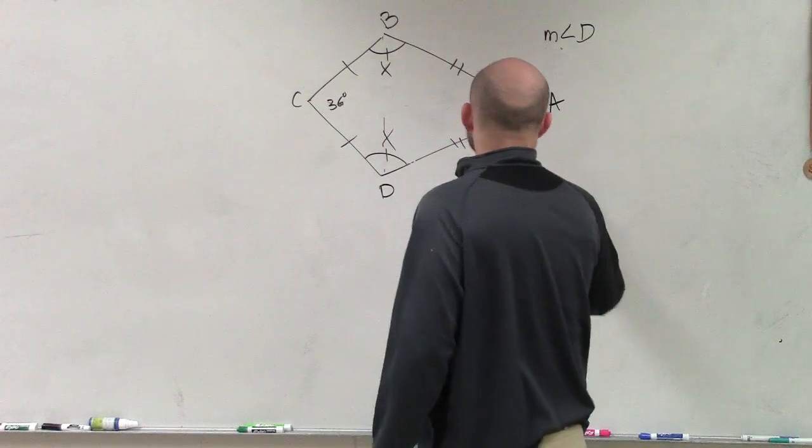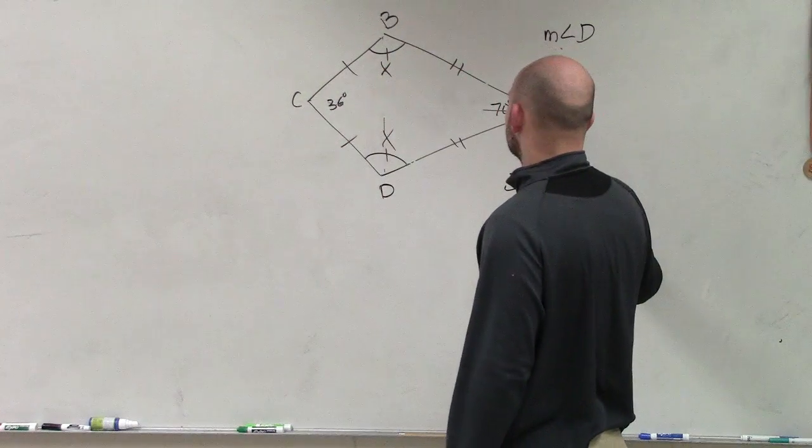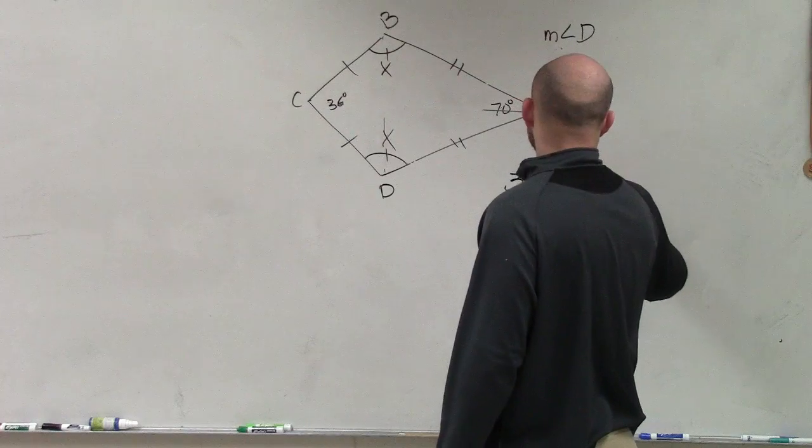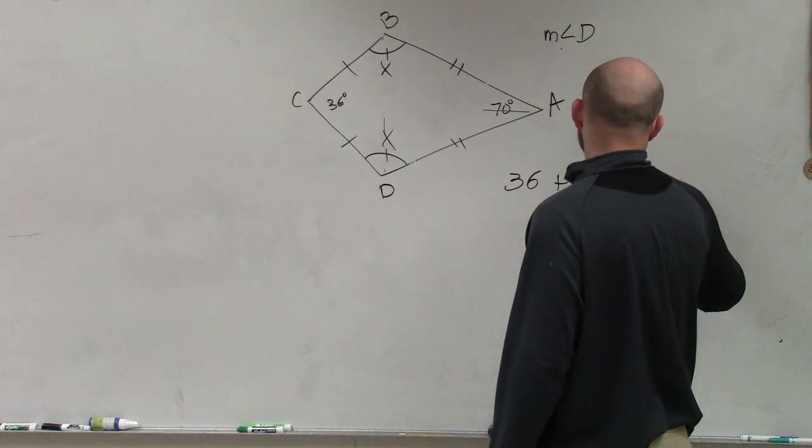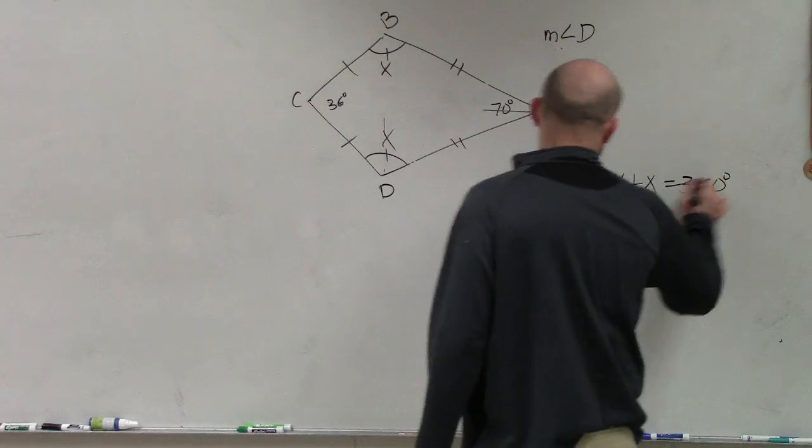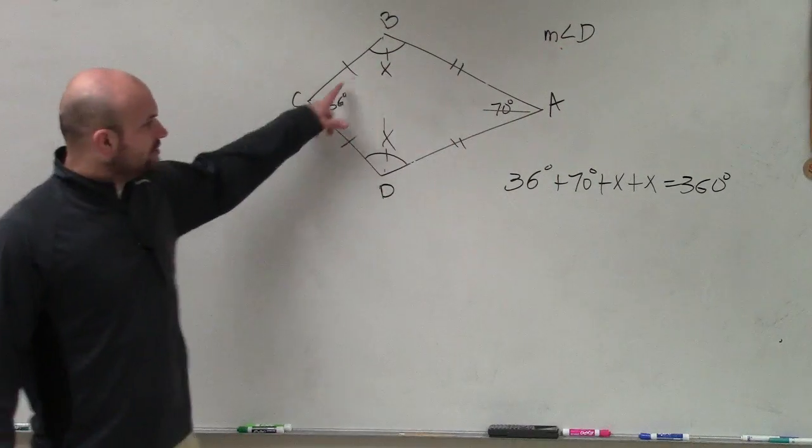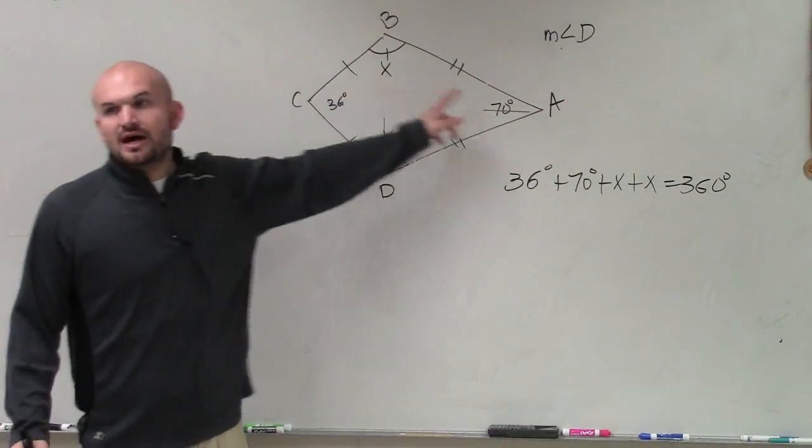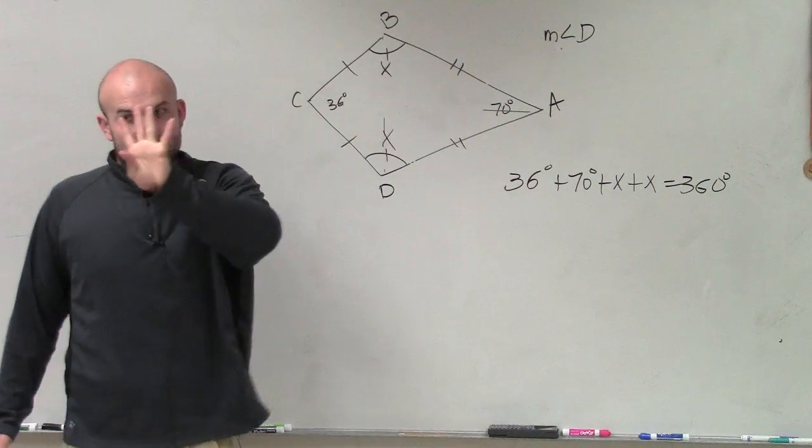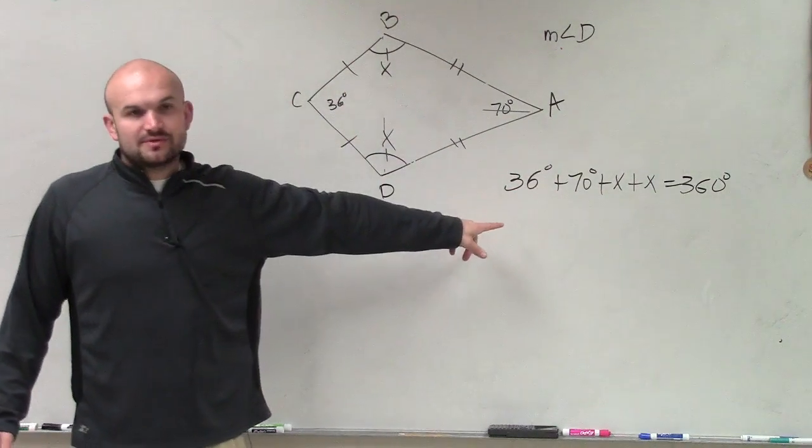So would it make sense that I can write this equation? 36 plus 70 plus x plus x equals 360. Does that make sense? All the angles inside of this kite, which is a quadrilateral because it has four sides, adds up to 360. Does that make sense?